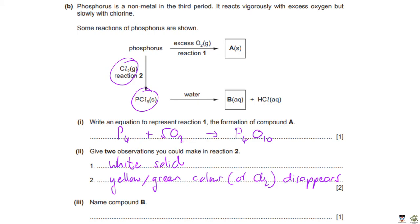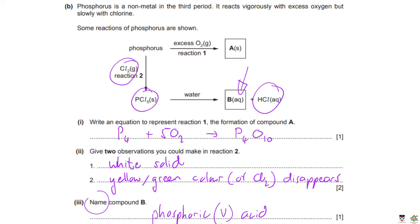Name compound B — the product of PCl₅ reacting with water. In addition to HCl observed as steamy fumes, an acidic solution is produced. The compound is phosphoric(V) acid, H₃PO₄. The systematic name requires the oxidation state of phosphorus: you can use the formula H₃PO₄ to work out that phosphorus has oxidation state +5, giving the name phosphoric(V) acid.